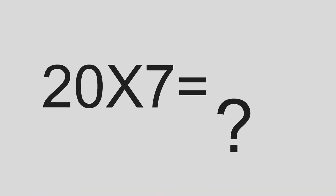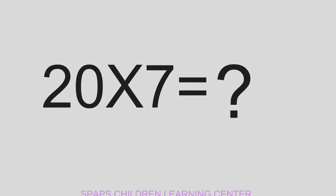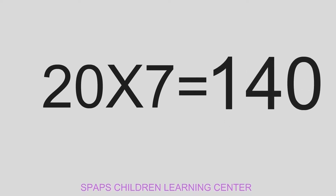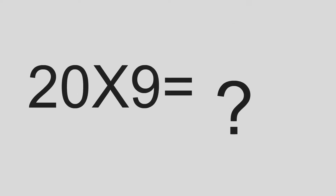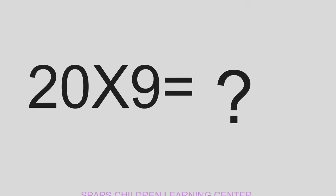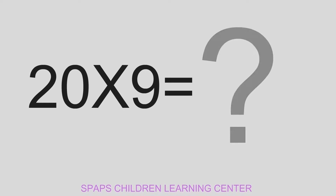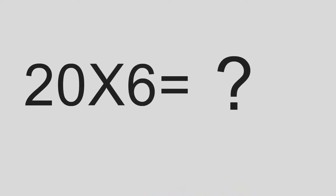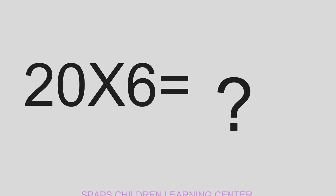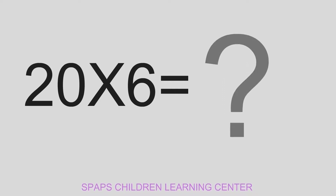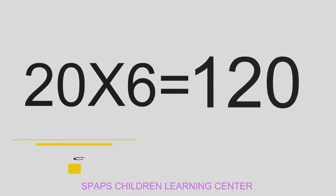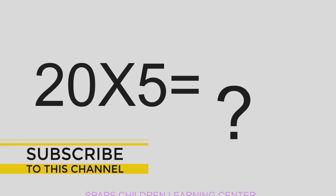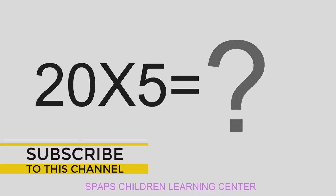20 times 7 equals 140. 20 times 9 equals 180. 20 times 6 equals 120. 20 times 5 equals 100.